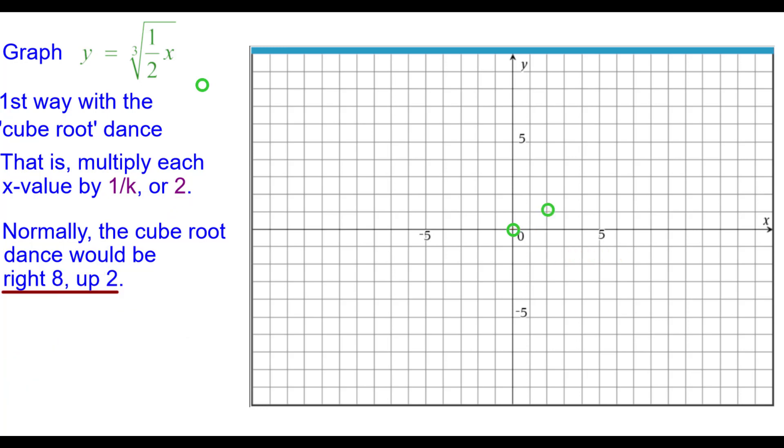Next in the dance right eight up two. But for us it will be right sixteen up two because two times eight is sixteen. That is going to be off the grid here.